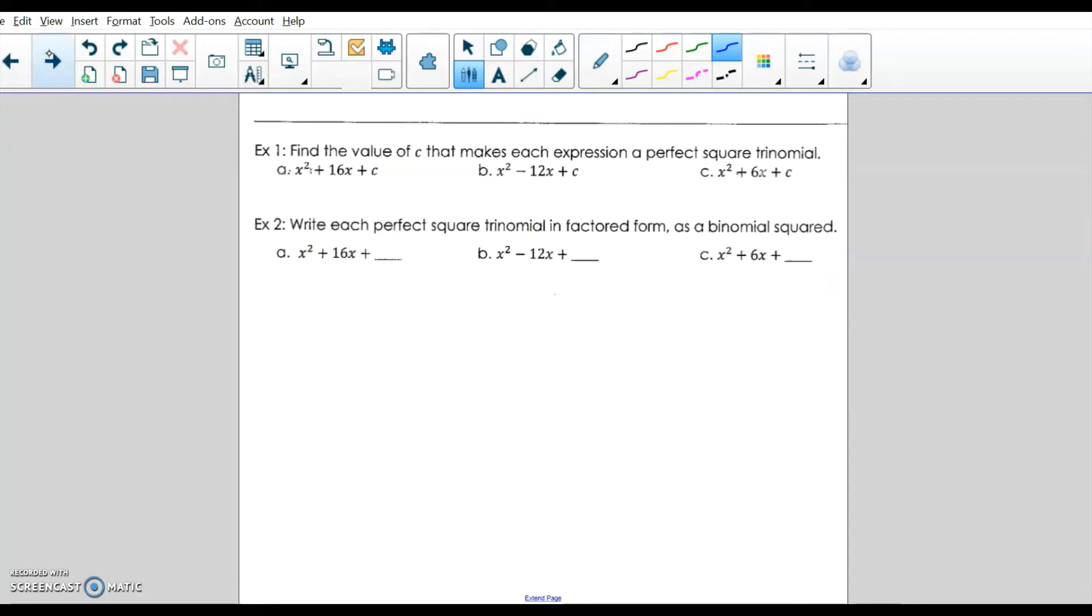So as we move forward, there is a completion of square technique: B divided by 2, quantity squared. That right there is the completion of square technique. Now you may be asking what is B. Well, A, B, C. So the B is the middle number for each quadratic.